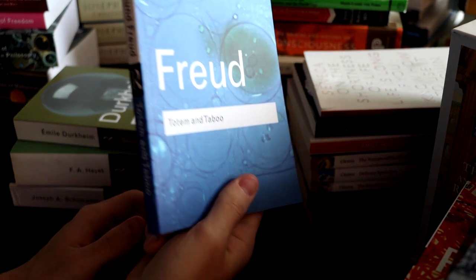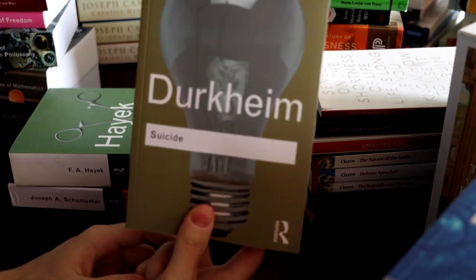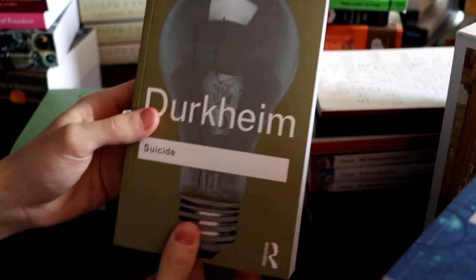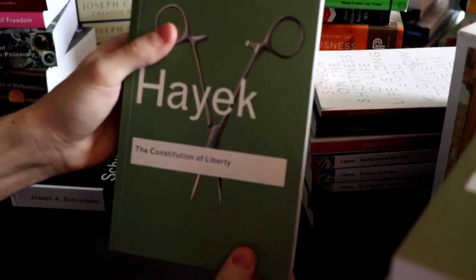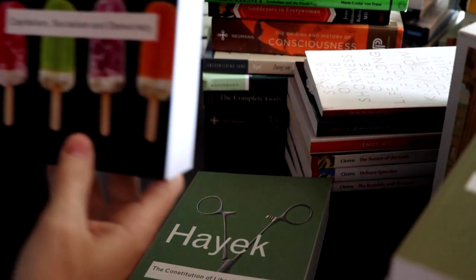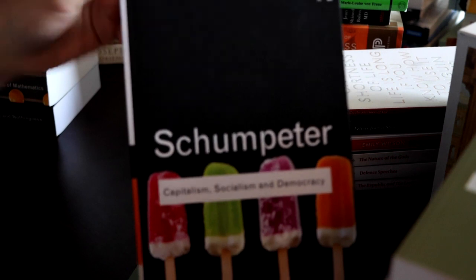I think this is actually one of his better books. Probably arguably, not his best book, but definitely one of his better books. Suicide by Durkheim. This is an interesting book. The Constitution of Liberty by Hayek. Capitalism, Socialism and Democracy by Schumpeter. This is a very important book for anybody who's into economics.